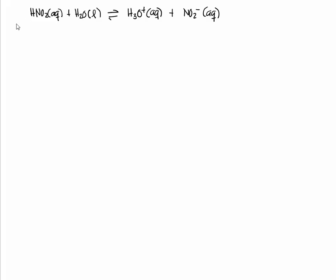Alright, let's construct the ICE table: initial, change, equilibrium. You're starting with 0.45 molar HNO2 and you're starting with 0.40 molar of NO2 minus. The NO2 minus comes from the NaNO2, and this is where the analysis starts.